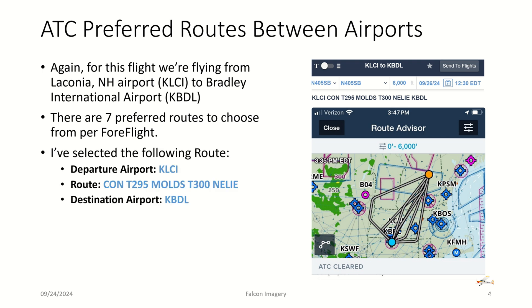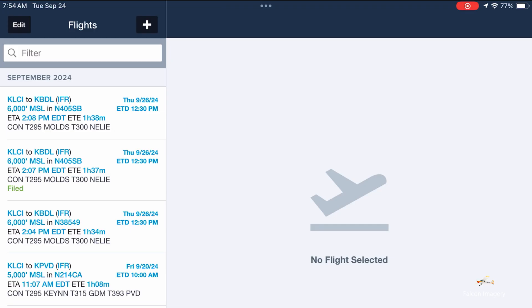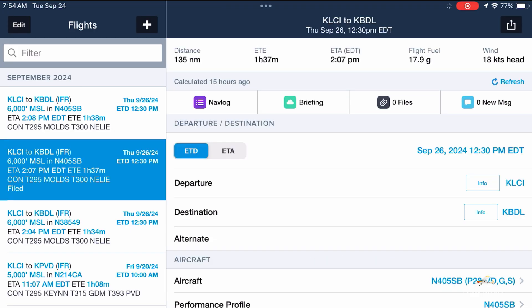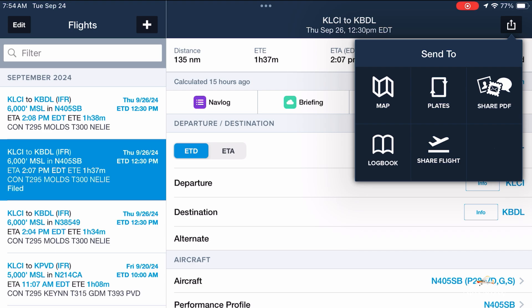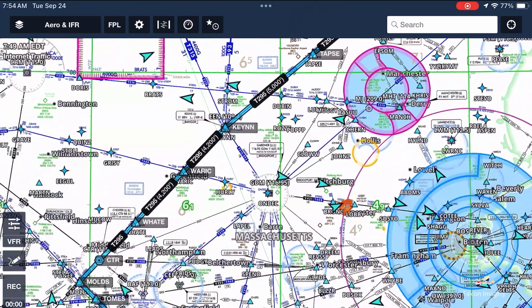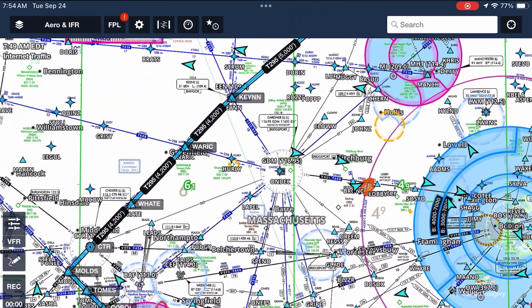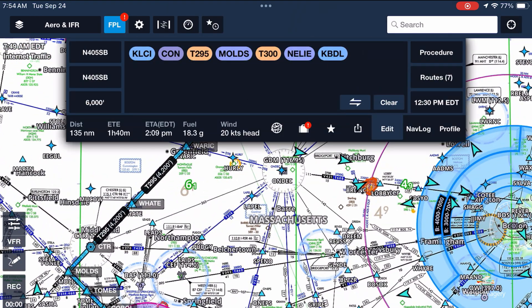I've selected the departure airport being Laconia, the route being the Concord VOR, the T295 route to Mold's intersection, to T300, to Nelly, and then finally the destination airport, Bradley International Airport. Here I am in ForeFlight, selecting the flight I've already saved to show you the route that I've filed for the trip to Bradley International Airport. In the flight plan view, I have the route bookended by the departure airport, Laconia, and the destination airport, Bradley.